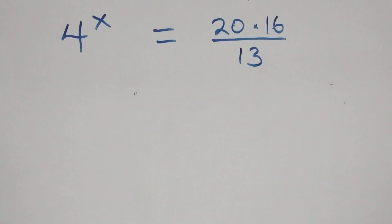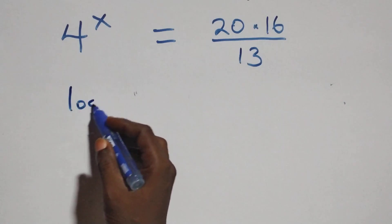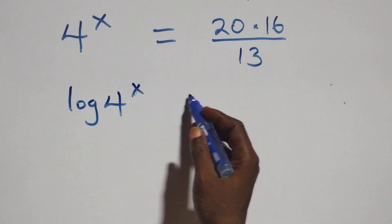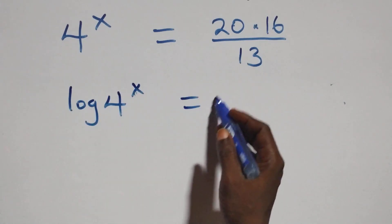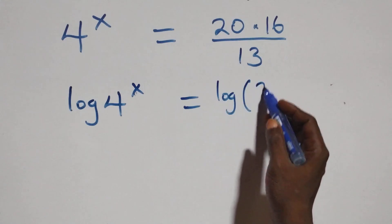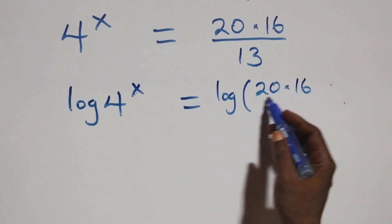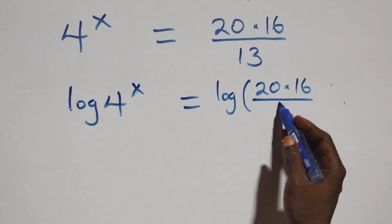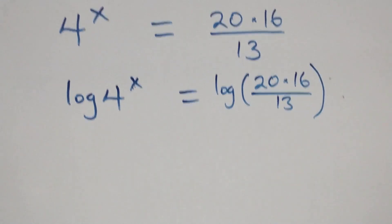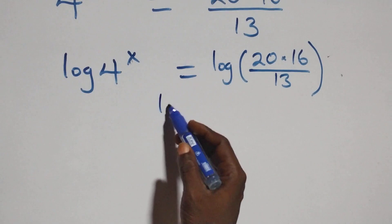Next step here, we take the log on both sides. At this, we have log of 4 raised to power x equals to log of 20 times 16 over 13. Then next step here, we apply the power rule of logarithms.